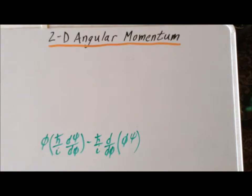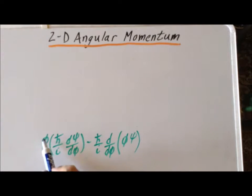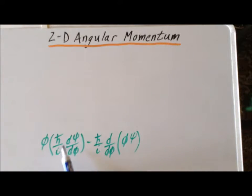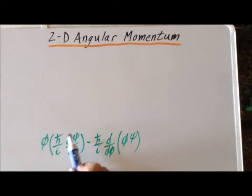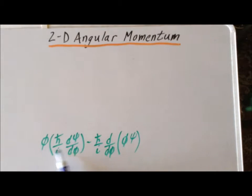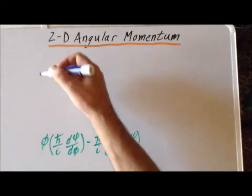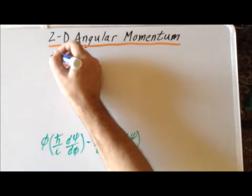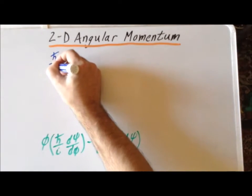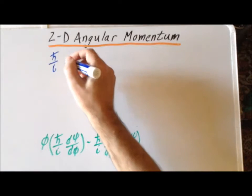For the first term, we simply have the multiplication of three terms: the angle phi, h-bar over i which is simply a number, and the derivative of psi with respect to phi. Since all these commute, we can rewrite them in a slightly different order — pulling h-bar over i out in front.